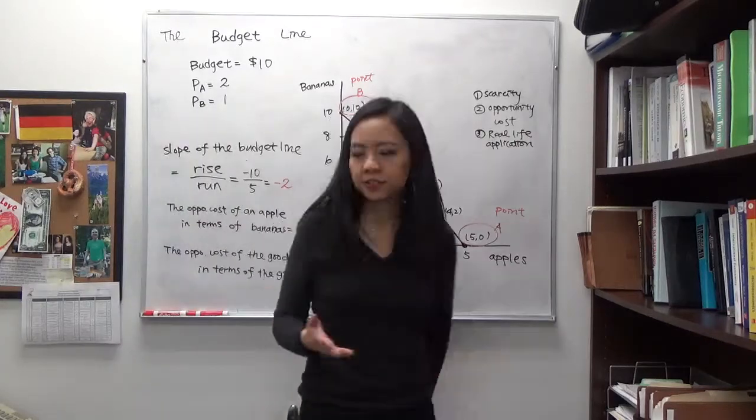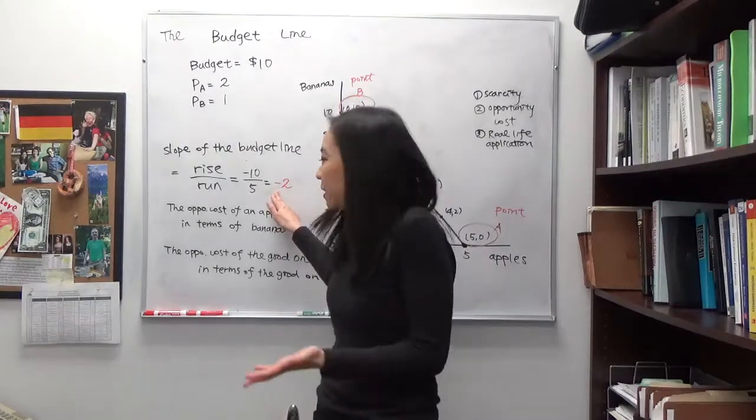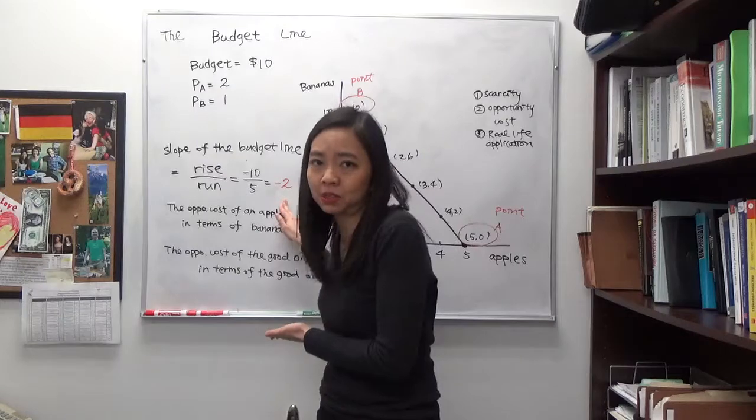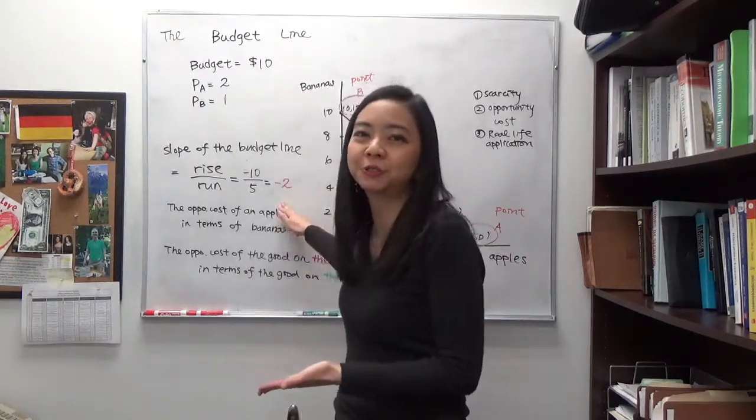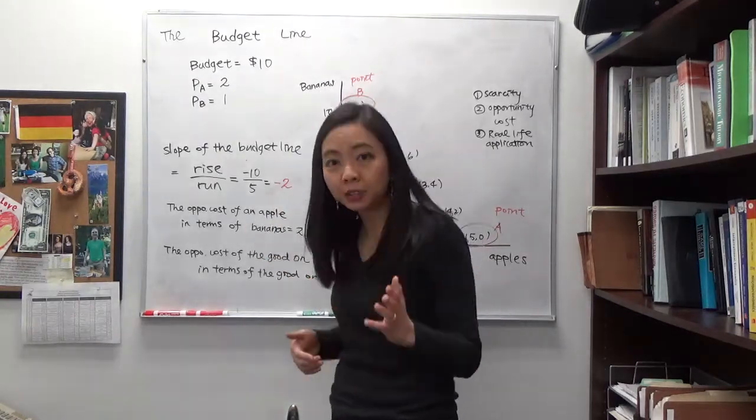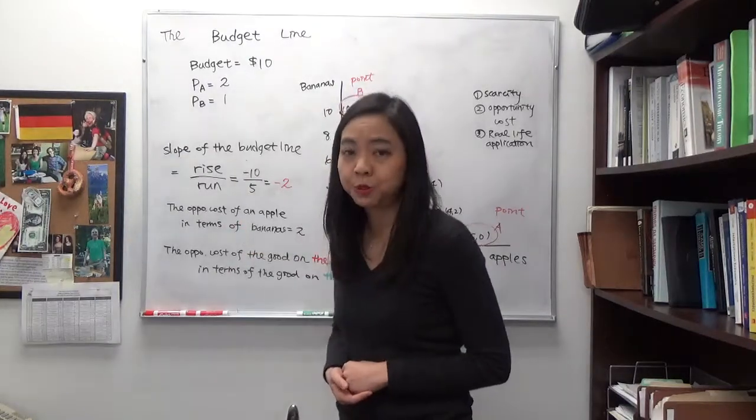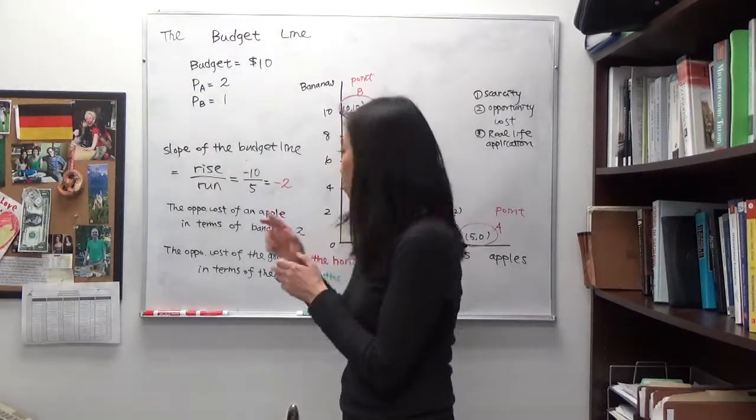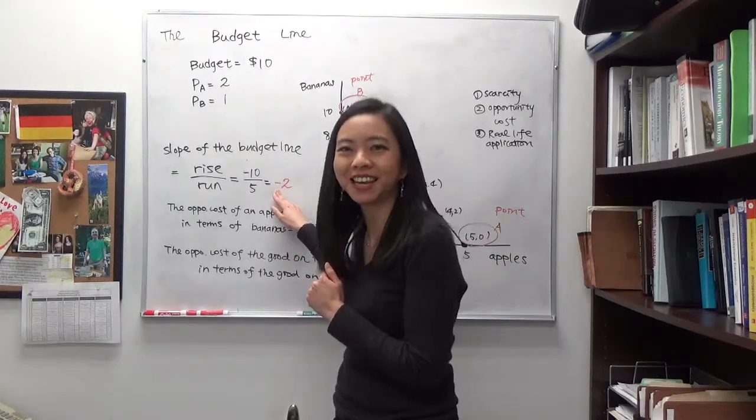So what does this mean? You see there's a negative sign. That means something. And going back to our economics, that means you're sacrificing something. So for each apple you get, you will have to sacrifice 2 bananas. That's the reason why you see a negative sign here.